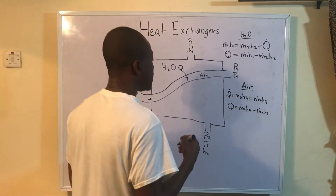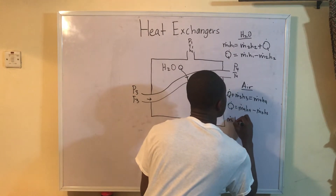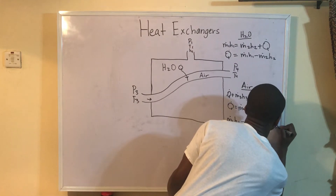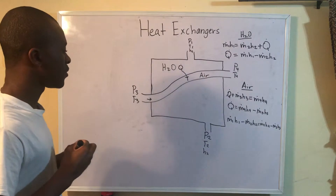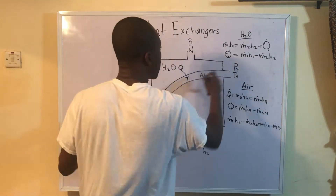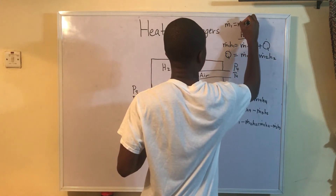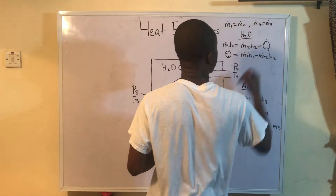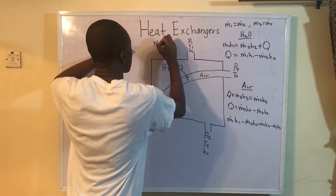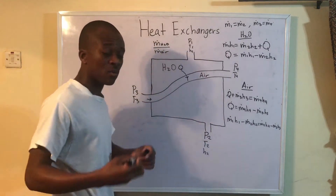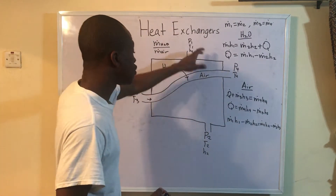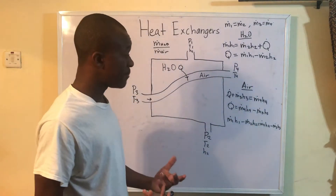Since these two Q dot expressions are equal, we can equate these equations. Solving for Q dot gives us M dot 1 H1 minus M dot 2 H2, and also M dot 4 H4 minus M dot 3 H3. Since these are equal, we can equate them. We also know that M dot 1 equals M dot 2 and M dot 3 equals M dot 4 because we're dealing with a steady-state system.